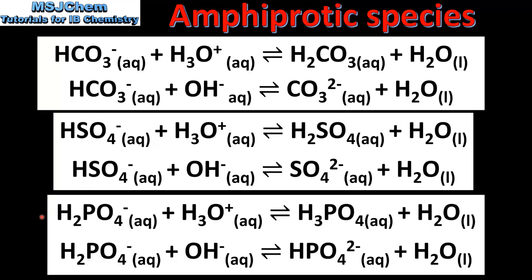Our last example is the dihydrogen phosphate ion. In the first reaction the dihydrogen phosphate ion is accepting a proton from the hydronium ion, and in the second reaction the dihydrogen phosphate ion is donating a proton to the hydroxide ion. So in the first reaction it is acting as a Bronsted-Lowry base and in the second reaction as a Bronsted-Lowry acid. Here we have three examples of amphiprotic species which are able to act as Bronsted-Lowry acids and Bronsted-Lowry bases.